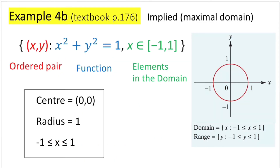Here is an example from page 176 in your textbook, example 4b. When it comes to a circle, it's quite interesting because we have an implied domain — a circle is restricted and normally has an implied domain. To represent this relation, we have the ordered pair (x, y), our function x² + y² = 1 in blue, and the domain stated in green: x is an element where x is greater than or equal to −1 and less than or equal to 1. When there is no (x−h)² or (y−k)² term, we assume the center of the circle is (0, 0), the origin.